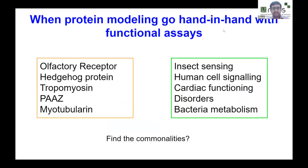Good afternoon everyone. This is the second talk in the function theme. Last week we covered protein 3D modeling and how it helped identify function. Today we have several more protein structure models to discuss, going from olfactory receptor, hedgehog protein, tropomyosin, PaaZ protein, and myotubularin. The structural modeling part can enhance into a wonderful story when we identify the functional role using experiments, or sometimes wonderful experiments need to be pursued further by doing structural models or solving structures through computational ways, followed by molecular docking.